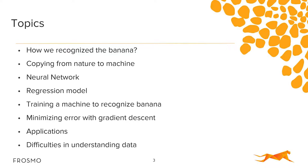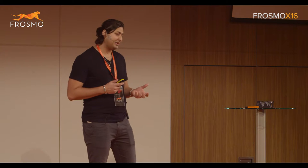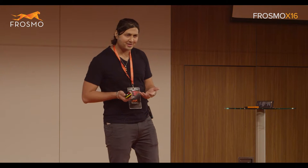This is going to be our general flow. We're going to understand how we were able to recognize the banana, then look deep inside our brain to find how it works. Then we take that and apply it to machines, look a little inside how that works, and then how we can apply it for ourselves. These are our topics for this afternoon.